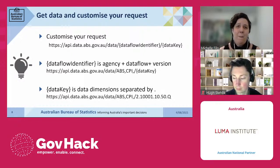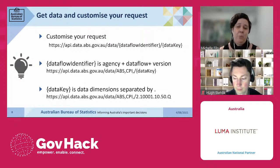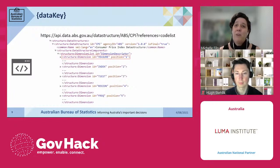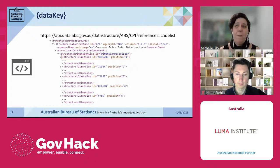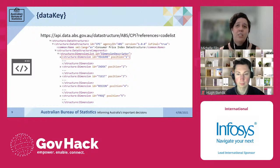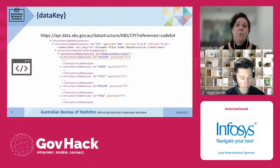The last piece of the puzzle is the data key. The data key section of the URL lets us tell the API that we only want a subset of the available data — a piece of the pie. We do that by providing the values we want from each dimension, separated by a full stop character. Firstly, we need to know what order the dimensions appear in the data flow, because that's the order we need to put them in the data key. We retrieve the data from our base URL plus a parameter to get structure information.